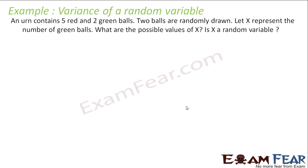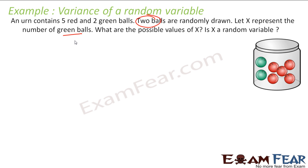The next question says: an urn contains 5 red and 2 green balls. Two balls are drawn randomly. X represents the number of green balls. What are the possible values of x, and is x a random variable? If two balls are drawn, 0 can be green, 1 can be green, or 2 can be green - three possible scenarios.